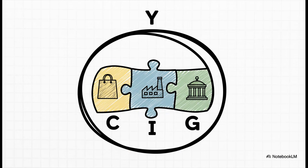This is the fundamental rule of the game. The total value of everything an economy produces — we call that Y, for yield or output — has to, it must equal the sum of everything spent. So that's consumption, plus investment, plus government spending. You can think of it like an unbreakable law of accounting for the entire country.